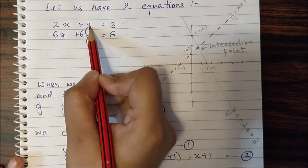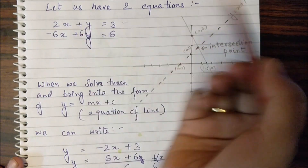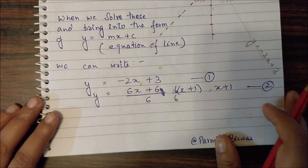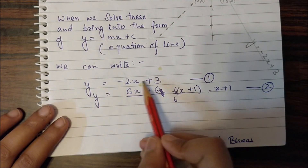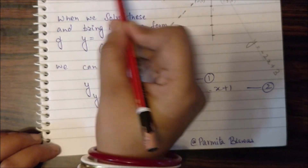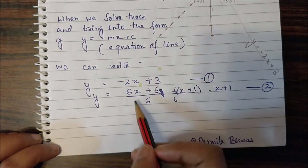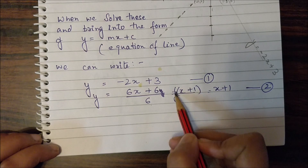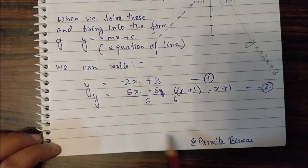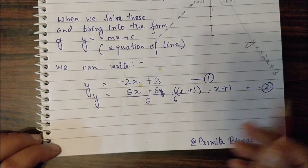We convert the first equation by transferring 2x to the right-hand side, giving y equals minus 2x plus 3. For the second equation, rearranging gives y equals x plus 1, after dividing by 6 and simplifying. Therefore we have two equations: y equals minus 2x plus 3, and y equals x plus 1.